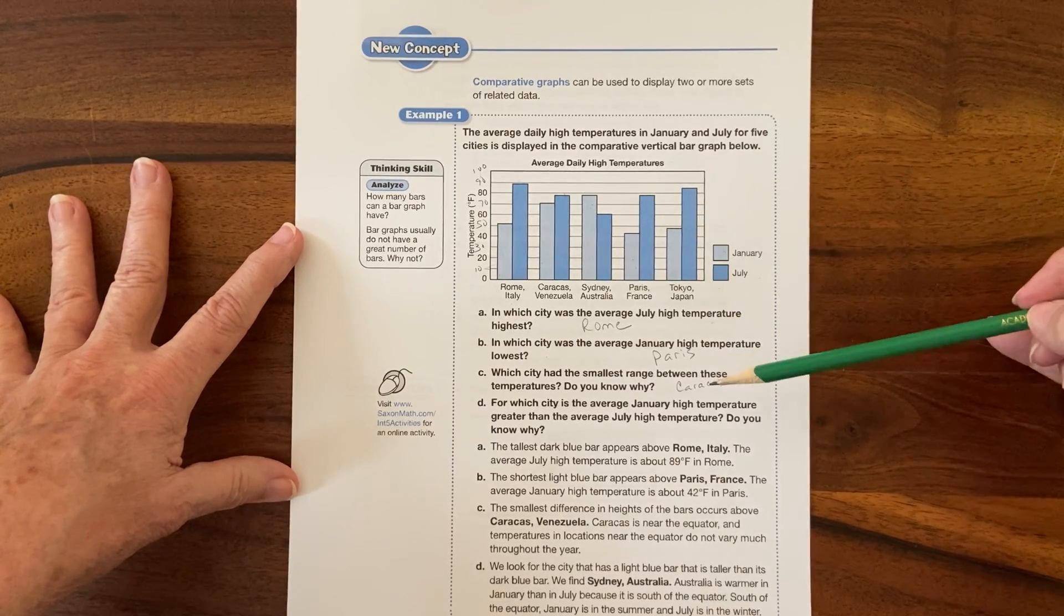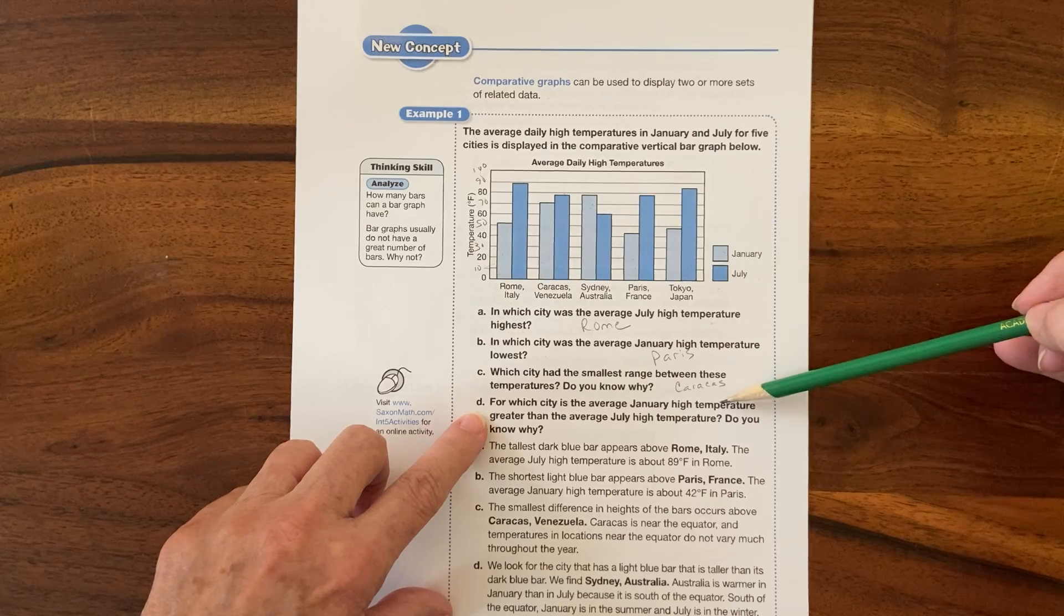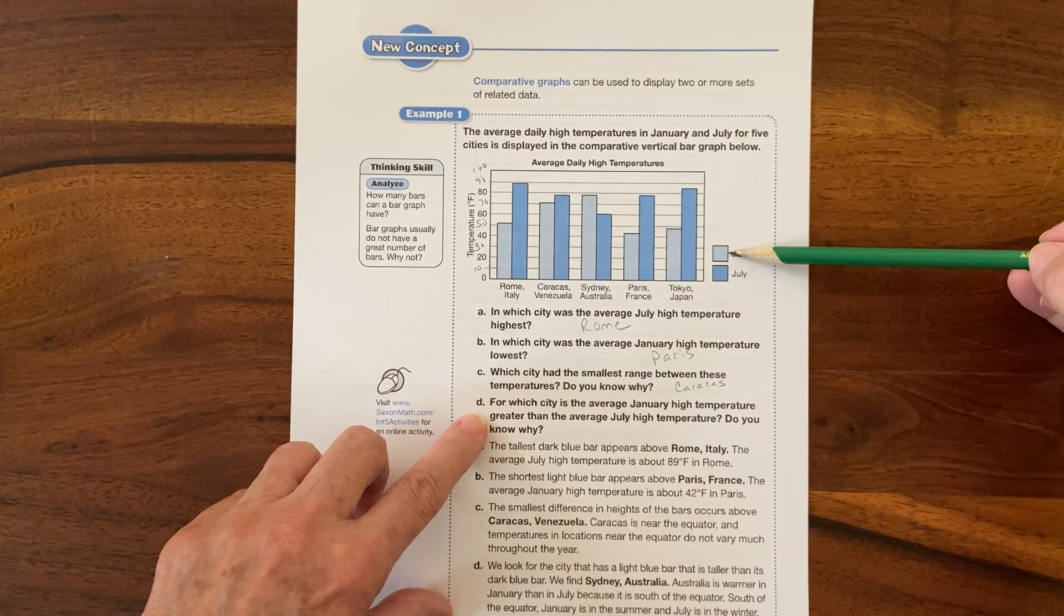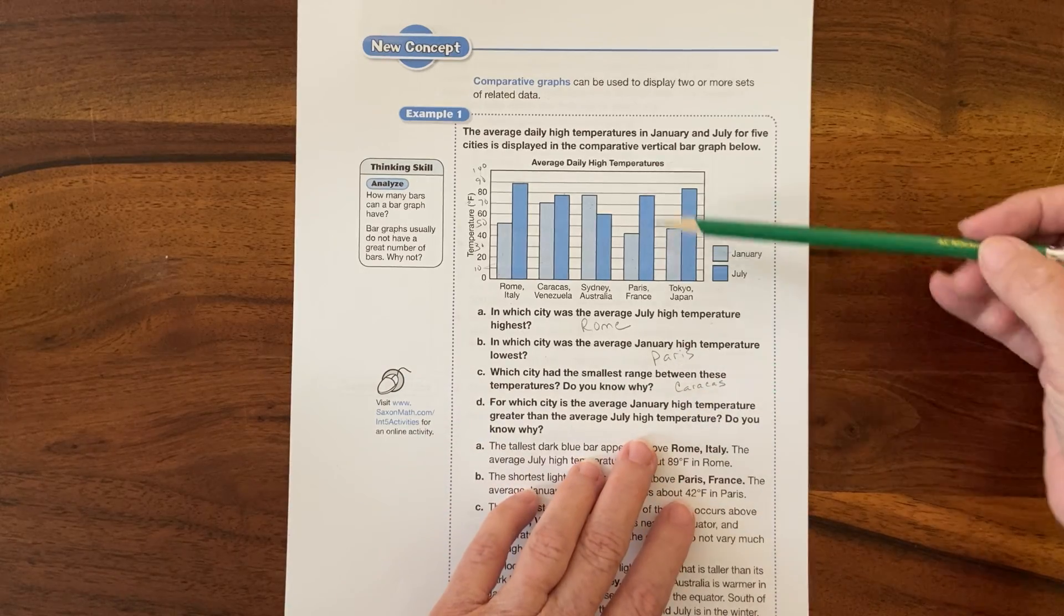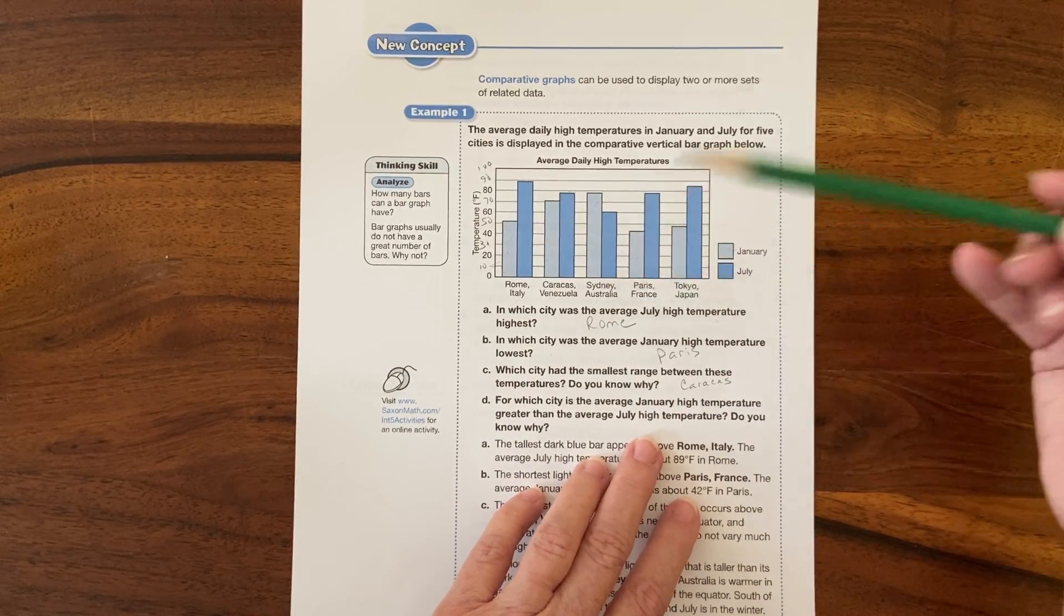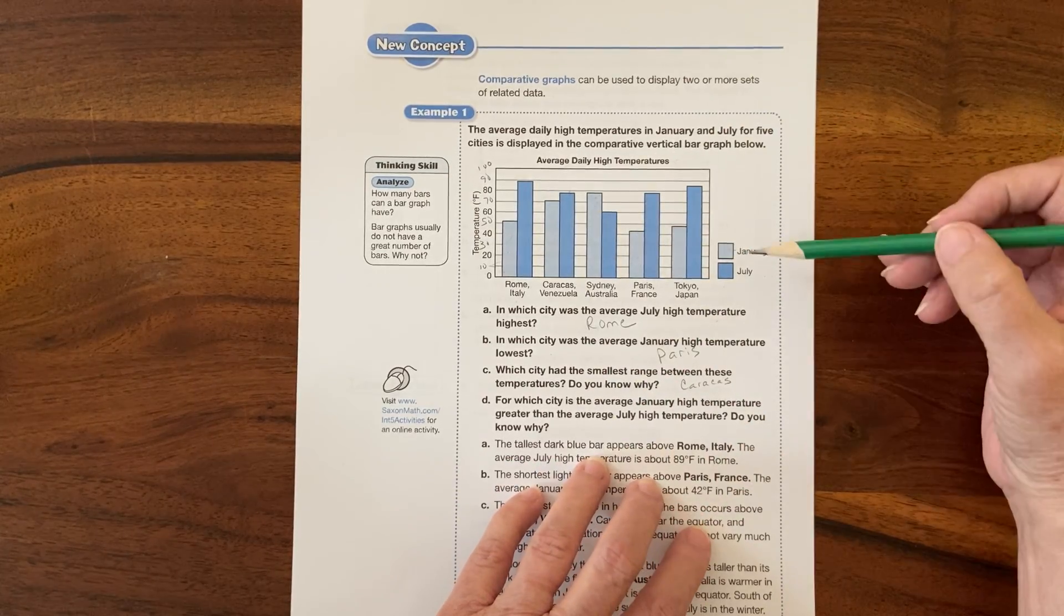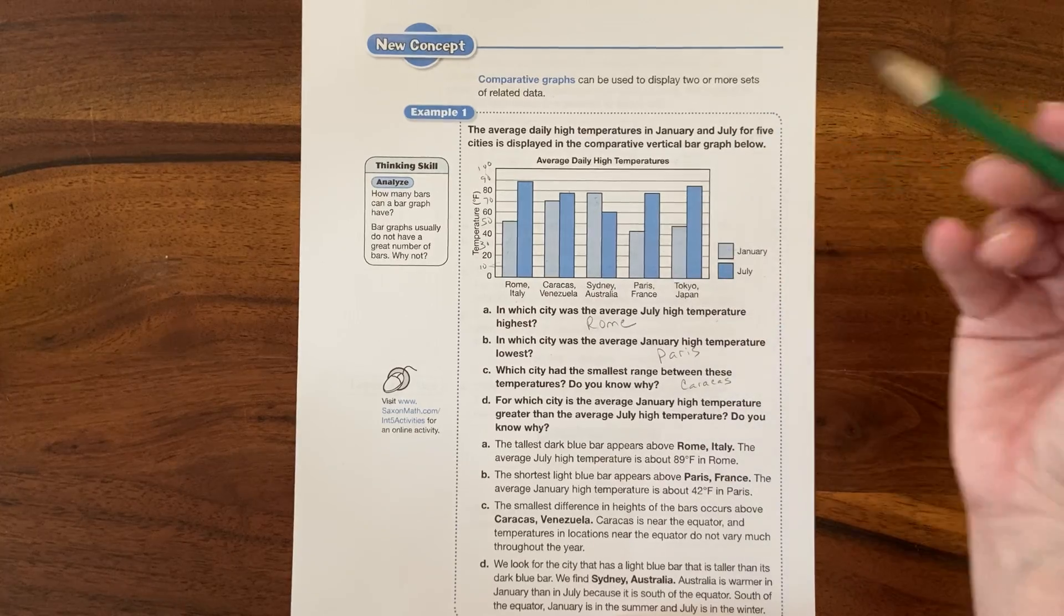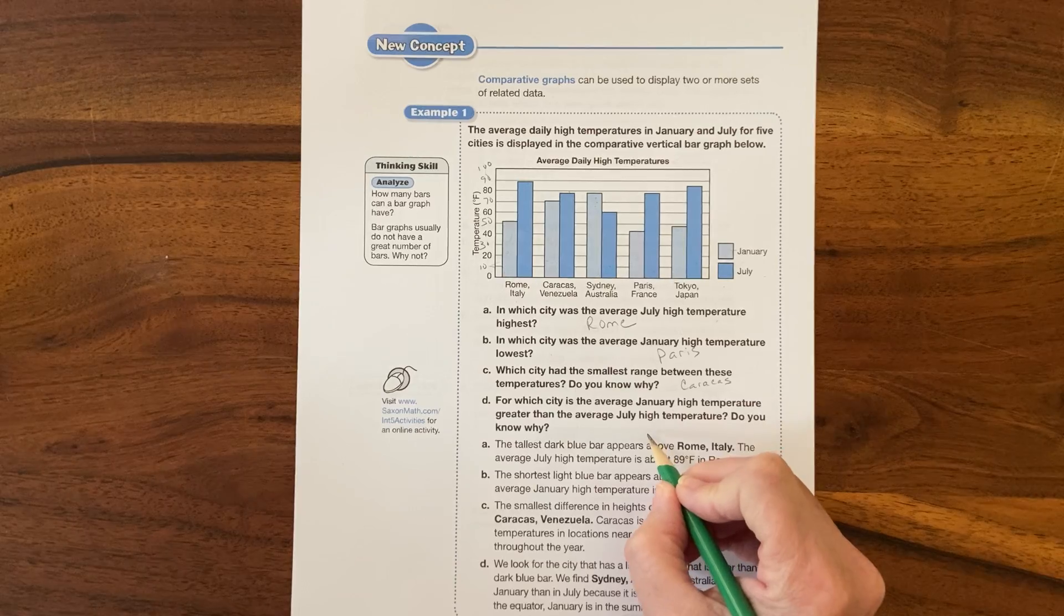For which city is the average January temperature, so I'm looking at the light blue, greater than the average July? Oh look, we already answered that didn't we? It's Sydney, Australia. It's a bigger, taller, greater temperature in January than in July because it's on the bottom part of the earth.